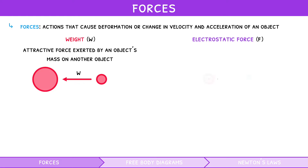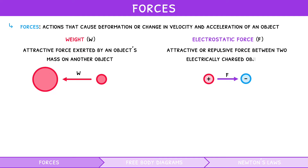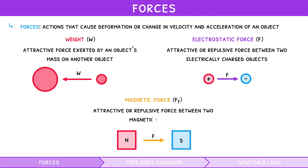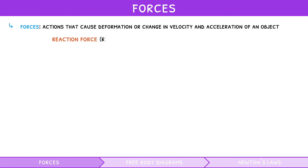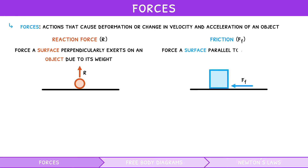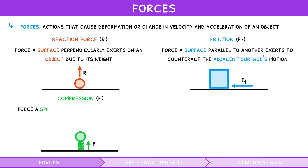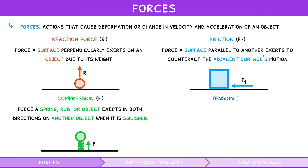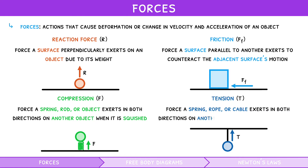Electrostatic force, which is the attractive or repulsive force between two electrically charged objects. Magnetic force, which is the attractive or repulsive force between two magnetic objects. Reaction force, which is the force a surface perpendicularly exerts on another object due to its weight — this can also be referred to as the normal force. Friction, which is the force a surface parallel to another exerts to counteract the adjacent surface's motion. Compression, which is the force a spring, rod or object exerts in both directions on another object when it is squished. And tension, which is the force a spring, rope or cable exerts in both directions on another object when it is stretched.